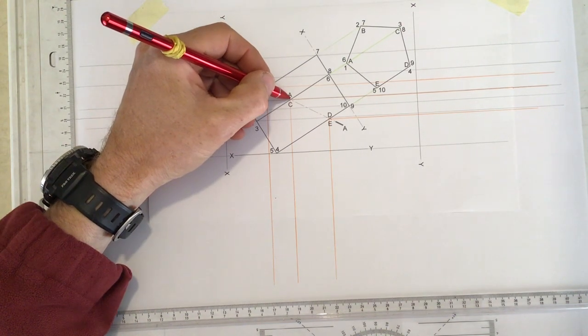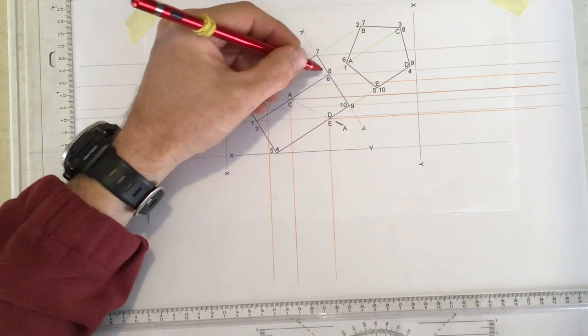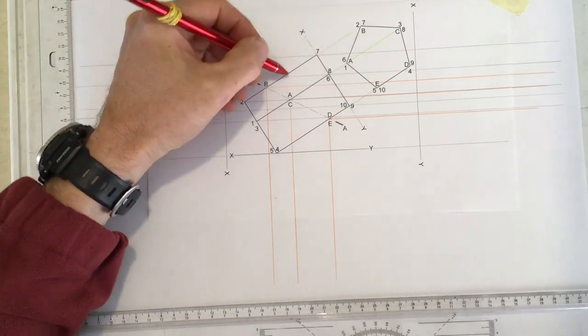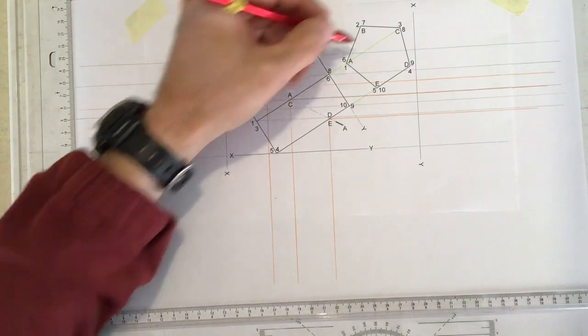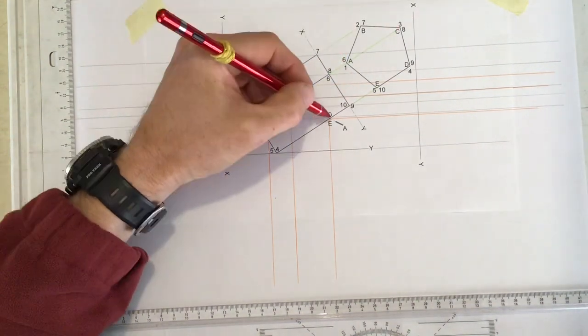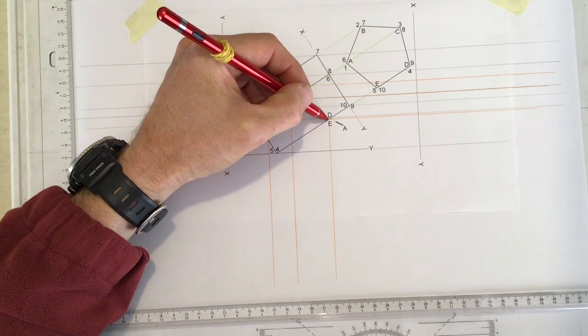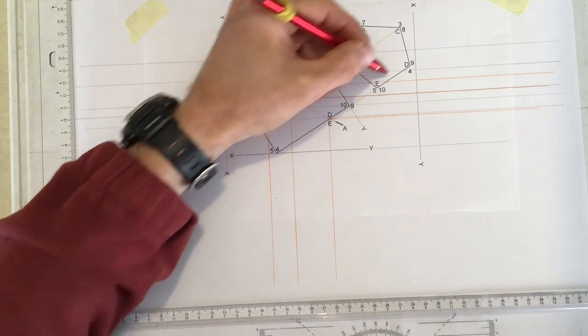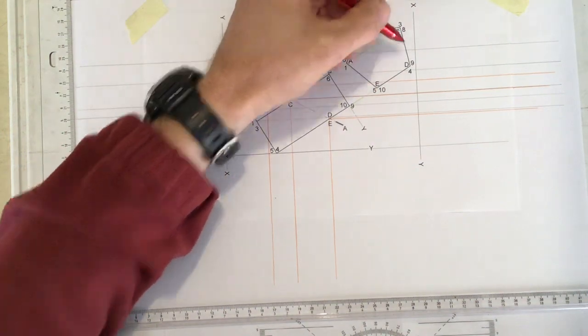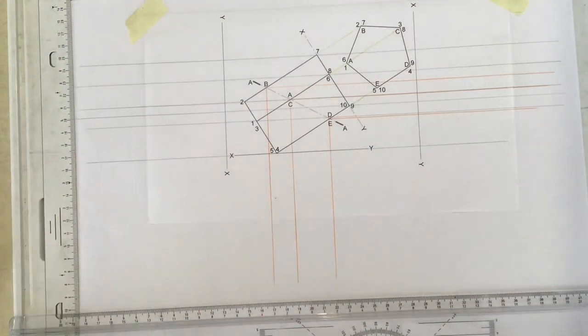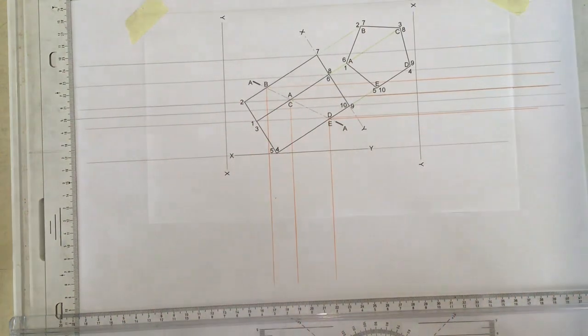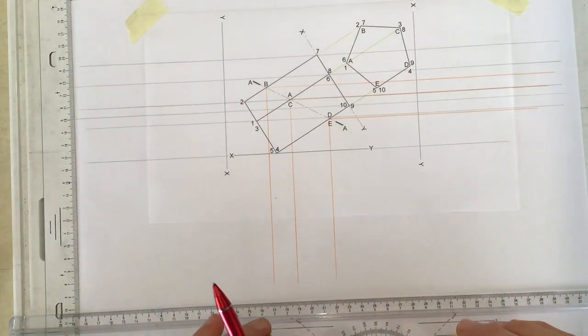Number A I've placed over there. There's number A and it is on line one-six. Number B on two-seven, number C on three-eight, number E on five-ten, and number D on nine-four. You can see all those letters over there. You can use numbers there as well. I've just used letters because I think it helps you to understand that cutting plane.